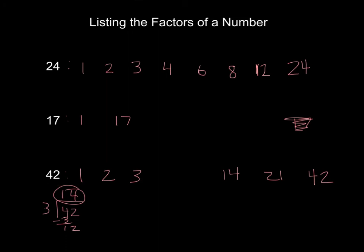5? No, because it ends in a 2. 6? Yes. 42 is divisible by 6. If you know your multiplication facts, 6 times 7 is 42. Again, the next number I would try would be 7, but we have already got to 7. So here's the list of all the factors of 42.